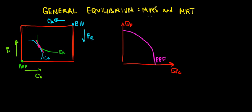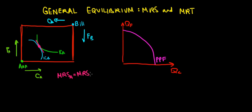Let's have a look at the association between marginal rate of substitution and marginal rate of transformation. Recall from the beginning of this series that in equilibrium consumers are going to trade food and clothing until their willingness to exchange is the same. At that point they exhaust all the possibilities of trading. So the marginal rate of substitution of N should equal the marginal rate of substitution of Bill at that specific point.